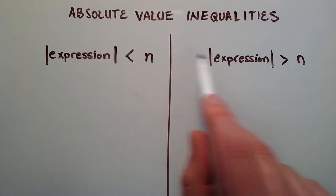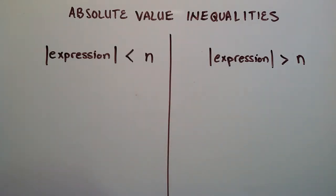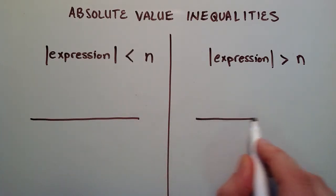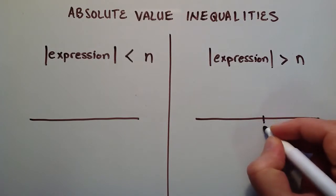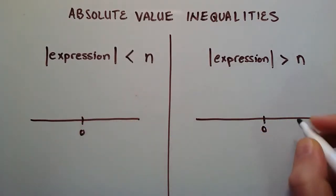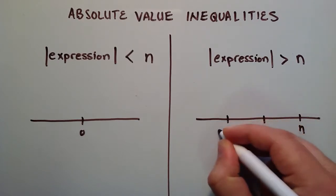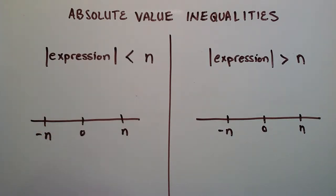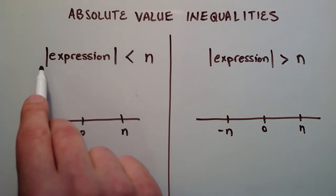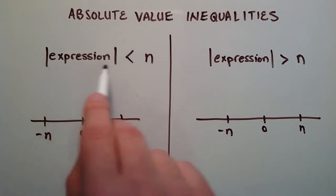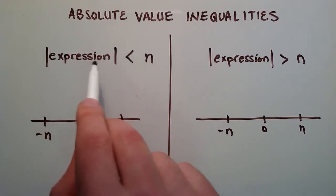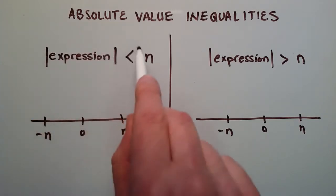These are the two types of absolute value inequalities we'll be dealing with. The easiest way to look at this is to draw a number line for each, putting 0 in the middle and marking n and negative n on both. The way to think about these solutions is to think about the absolute value of the expression as a distance from 0.